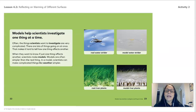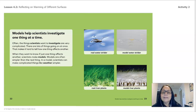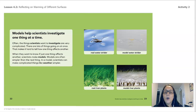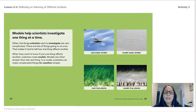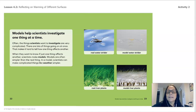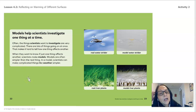Models help scientists investigate one thing at a time. Often the things scientists want to investigate are very complicated — there are a lot of things going on at once that makes it hard to tell how one thing affects another. When they want to know if just one thing affects another, scientists make models. Models are often simpler than the real thing. In a model, scientists make complicated things like weather simpler, using models to help them come up with conclusions.